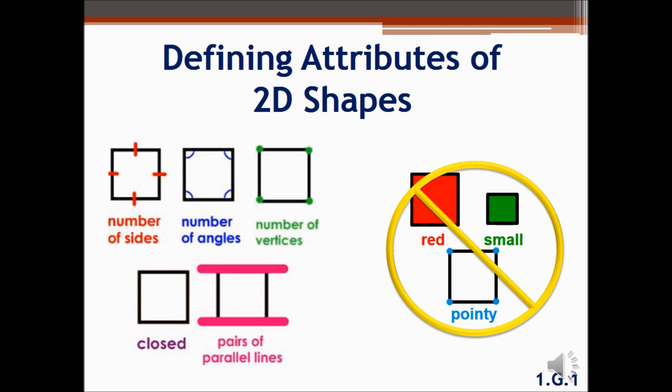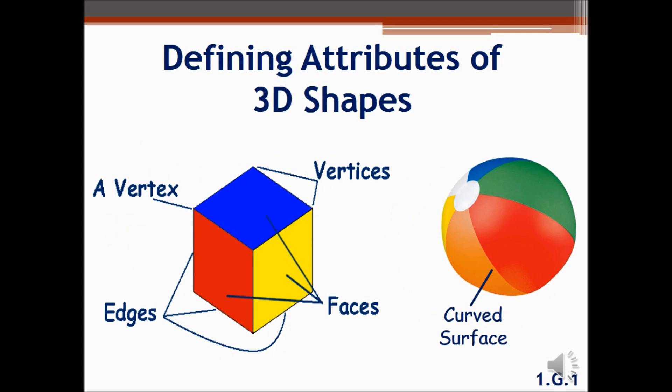Defining attributes are those qualities that make a shape a shape. Attributes such as red, small, and pointy are not defining attributes. Defining attributes for three-dimensional shapes include qualities such as faces, edges, and vertices.